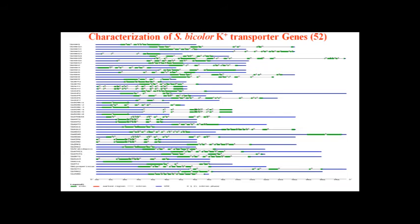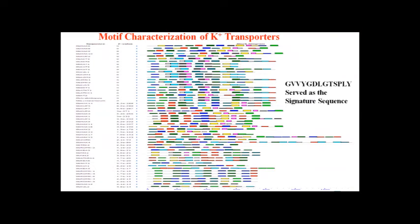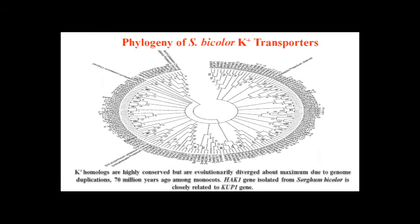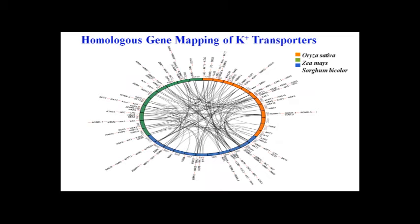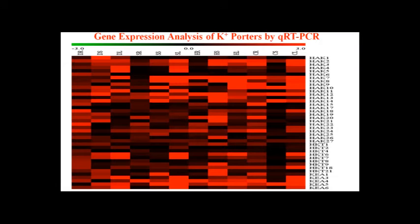Similar to sodium transporters, we also analyzed potassium transporters. We identified 52 different potassium transporters and performed gene characterization — exon/intron structure, motif characterization — revealing the presence of a signature sequence GVVYGDLGTSPL present in all potassium transporters. We constructed a phylogeny and developed a CIRCOS map comparing Oryza sativa, Zea mays, and Sorghum bicolor, showing some chromosomes are hotspots for potassium transporters. Gene expression analysis by qRT-PCR identified HAK1 and KEA as highly expressed in cold leaf, followed by cold root, heat stem, salt leaf, drought leaf, and drought stem; KEA are more highly expressed than HAK.